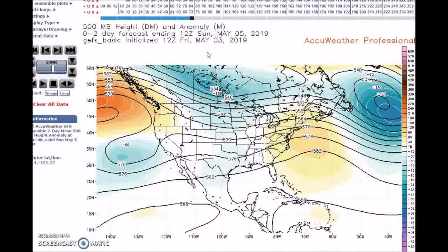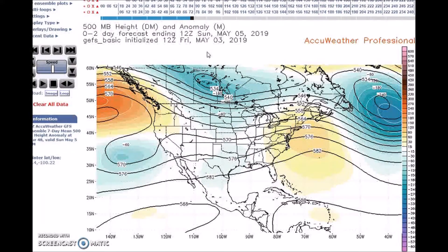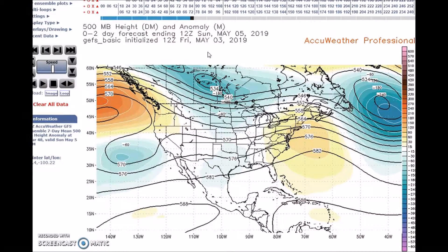A moist flow from the Gulf will intersect a front near the Gulf Coast, and then an ejecting southwest US feature will bring a surface wave and trailing front into the southern plains. There will be a threat of heavy rain persisting near the southern plains through Friday as the front stalls and becomes parallel to the flow aloft. The western states will receive precipitation from California through the Great Basin and the Rockies.